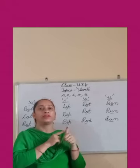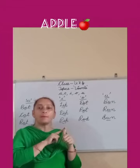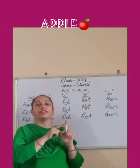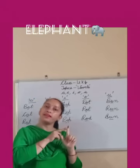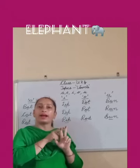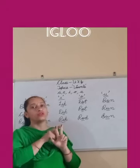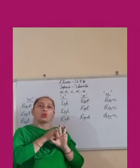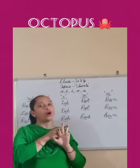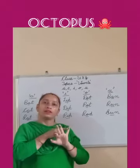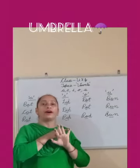A — the sound of A is 'a', as in apple. E — the sound of E is 'e', as in elephant. I — the sound of I is 'i', as in igloo. O — the sound of O is 'o', as in octopus. U — the sound of U is 'u', as in umbrella.